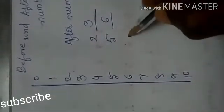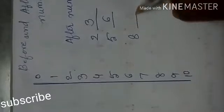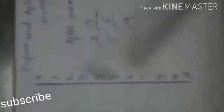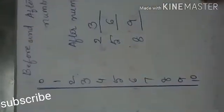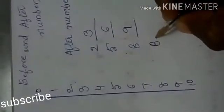Next, 8 — afterwards what? 9. Like this, these are called after numbers. The down numbers are called after numbers.